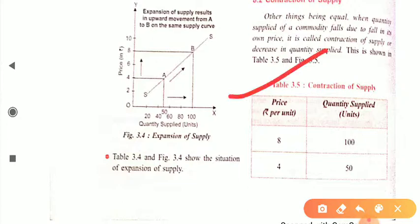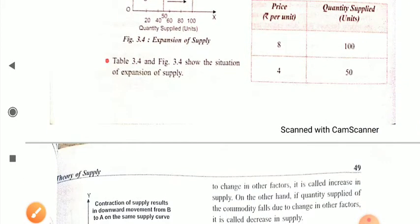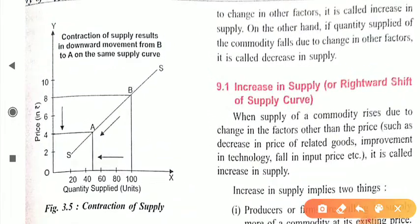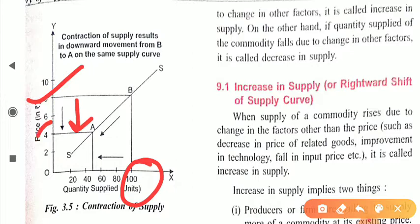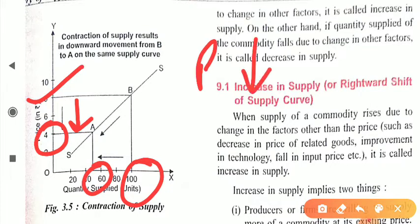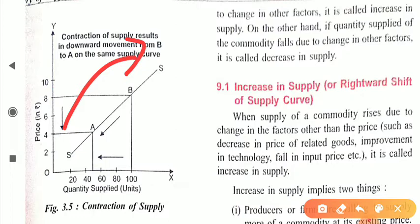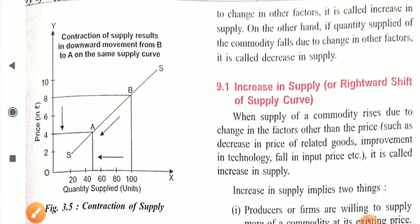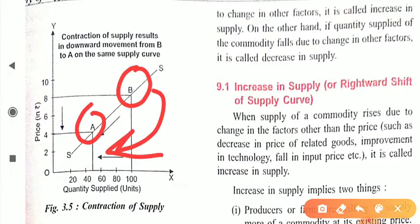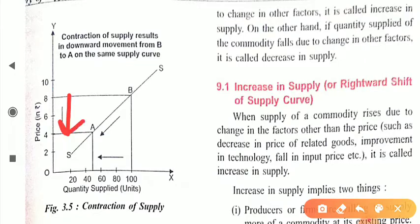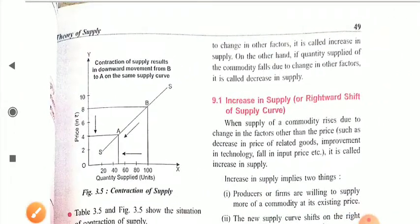With a table: when price of a commodity decreases from 8 to 4, quantity supplied decreases from 100 to 50. In the diagram, when price falls to 4, the new quantity supplied is 50. The supply curve moves from point B back to point A — this downward movement is known as contraction of supply.